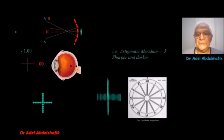As you notice, the astigmatic meridian will appear sharper and darker. This is the error in the vertical.